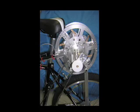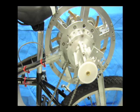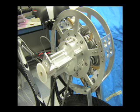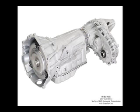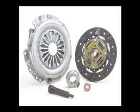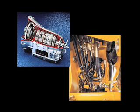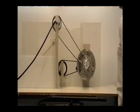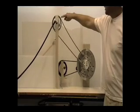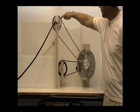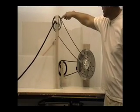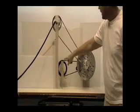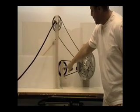FOMO — a true infinitely variable transmission — would have made Henry Ford smile. Most current transmissions use energy-robbing clutches, shifting, hydraulics, or friction to change speed. This shows how FOMO can convert the constant input speed from a motor into an infinite range of output speeds without any of these disadvantages.